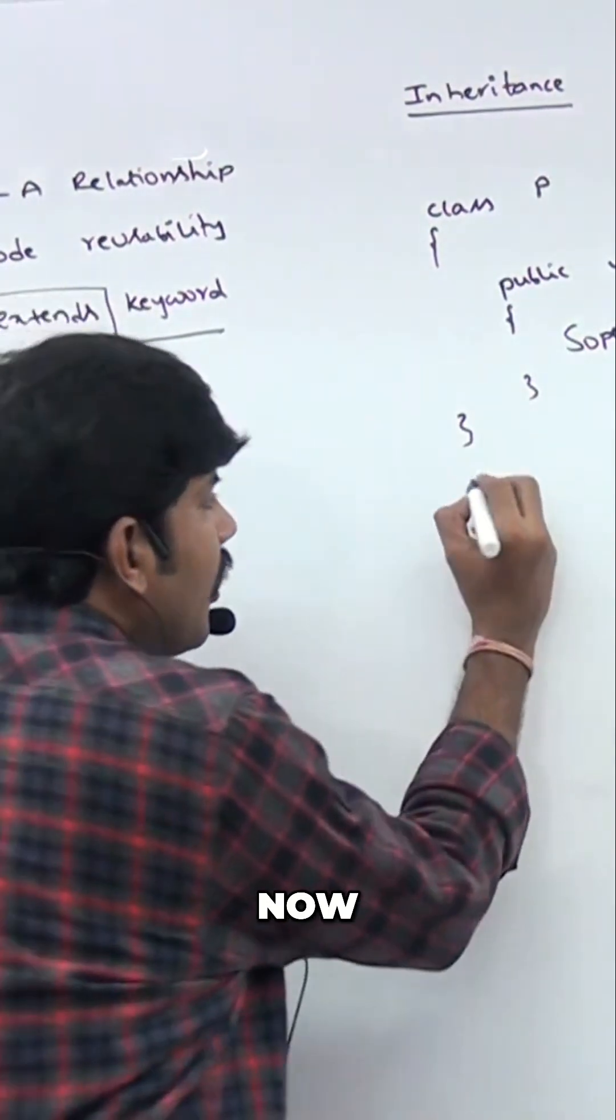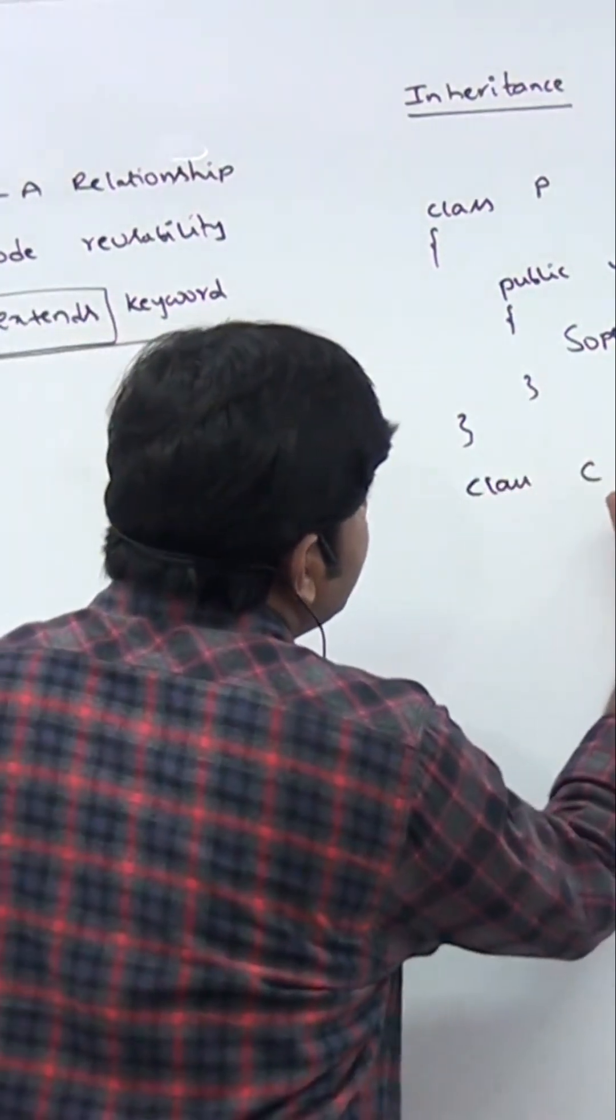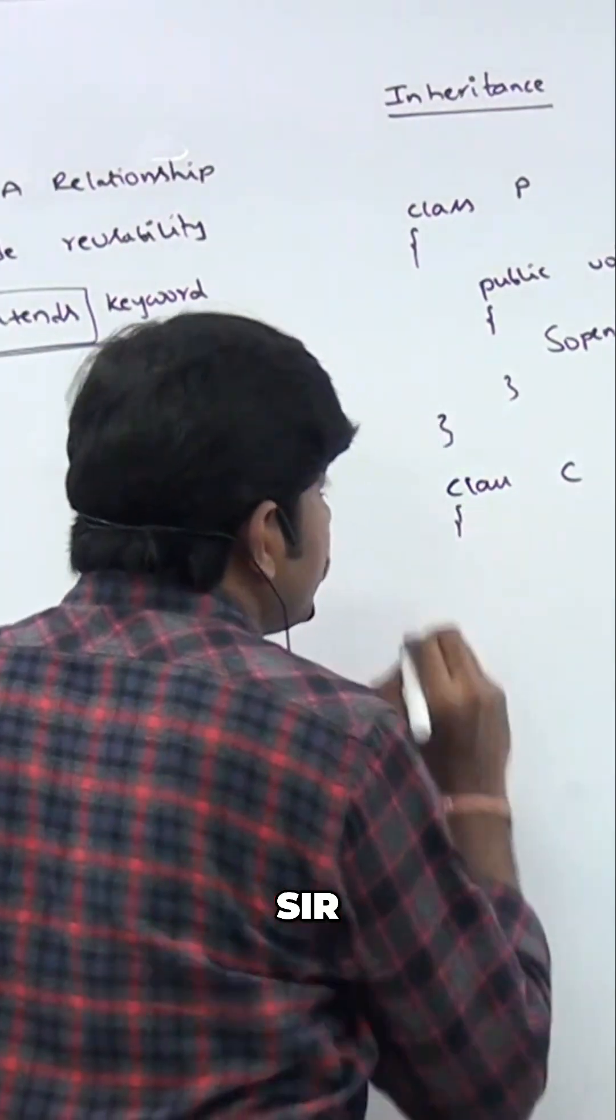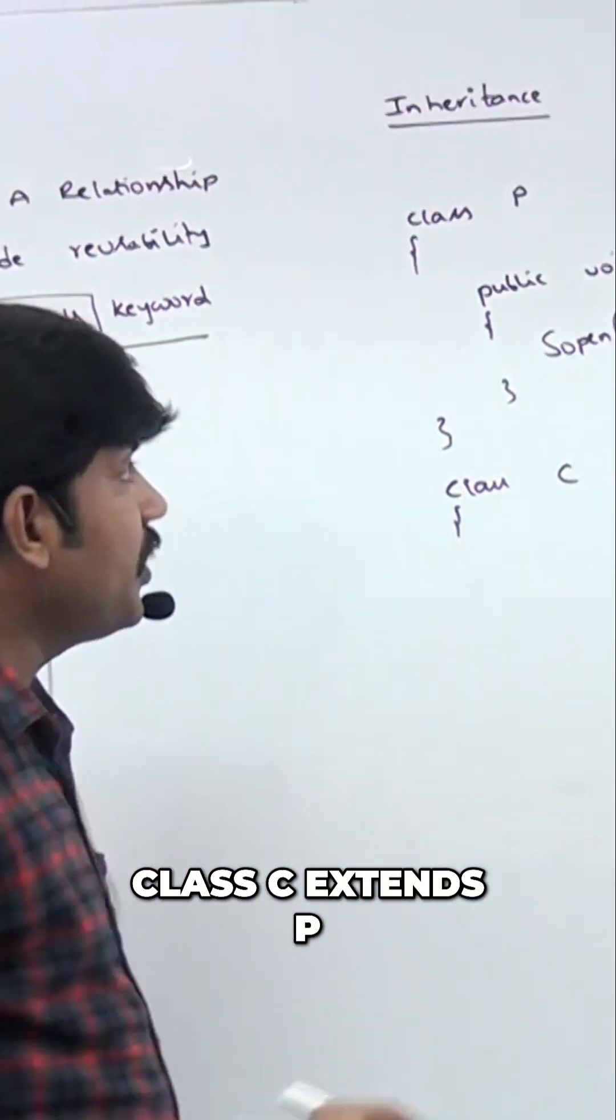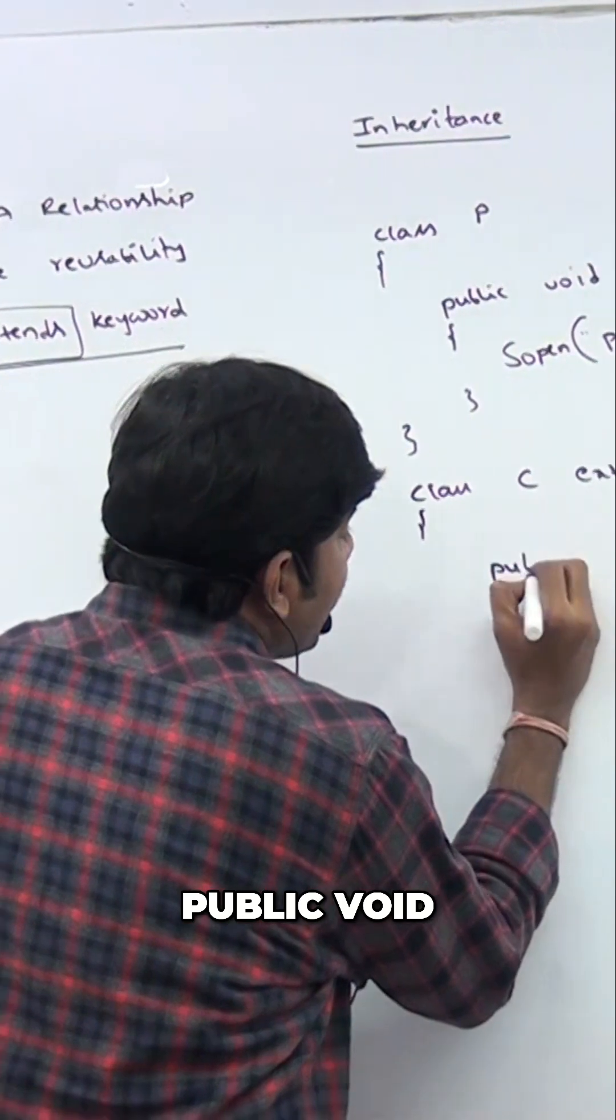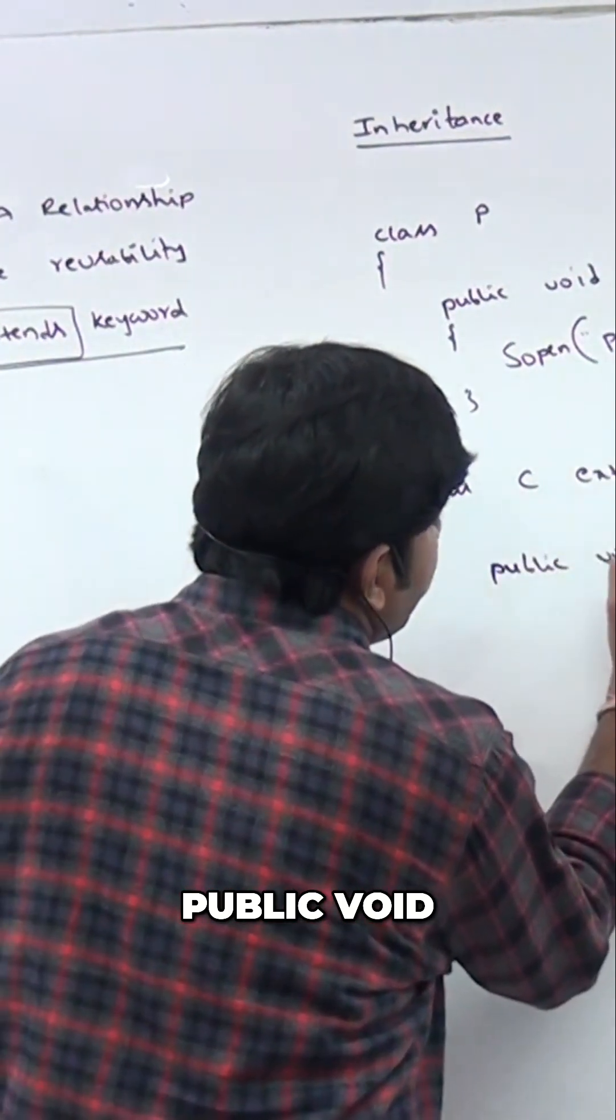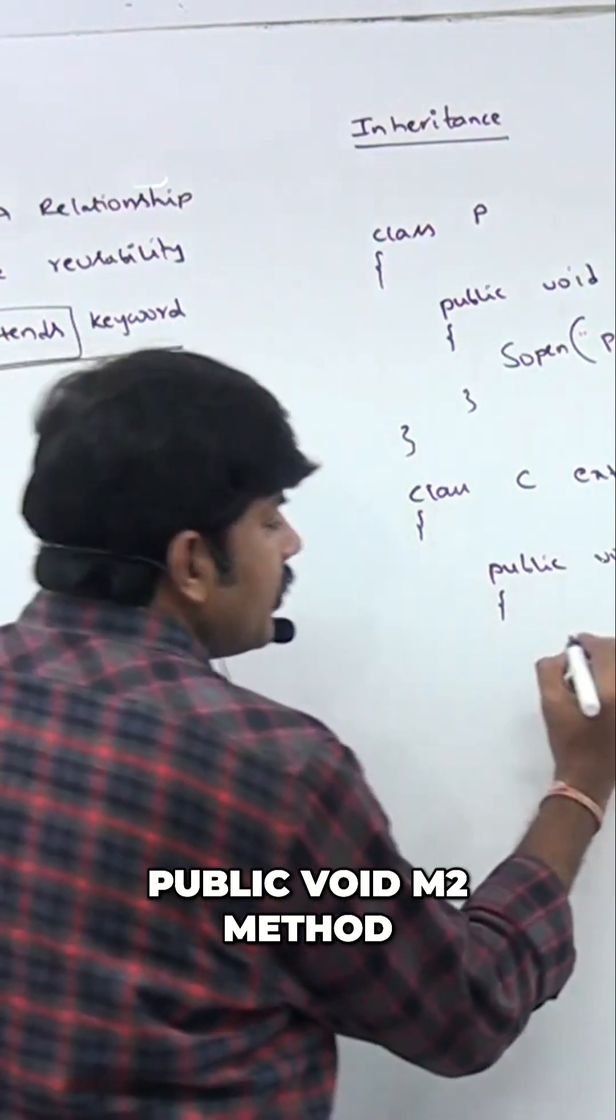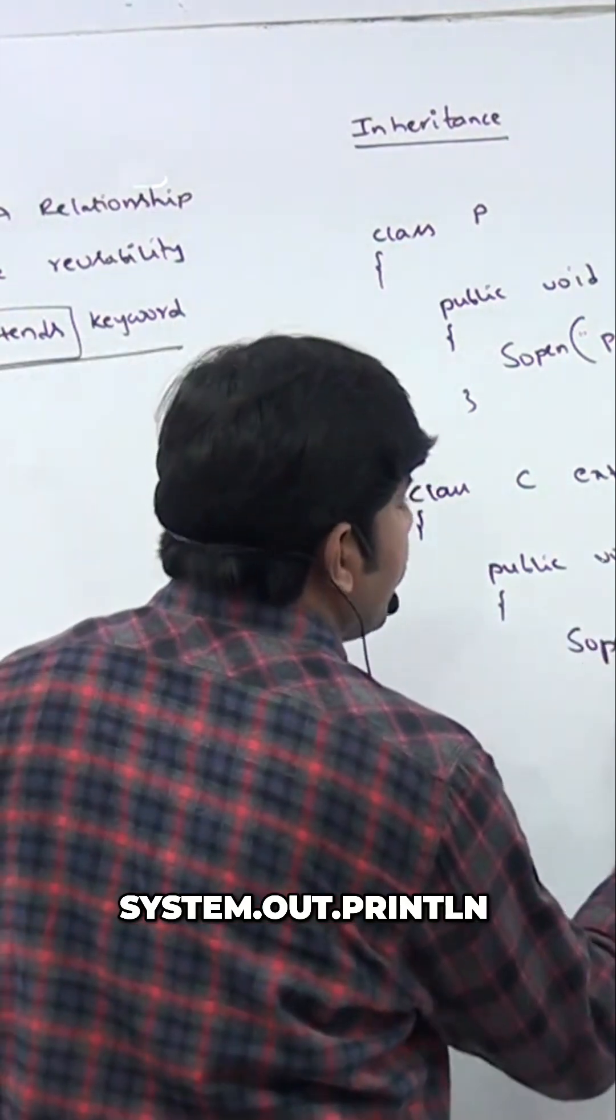Now class C extends P. Class C extends P. Okay, public void m2 method. Public void m2 method, System.out.println, and 'child'. Like this I'm taking.